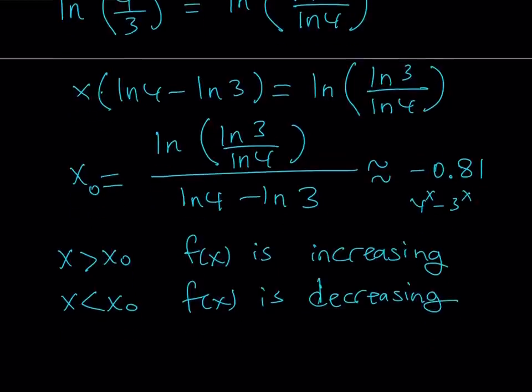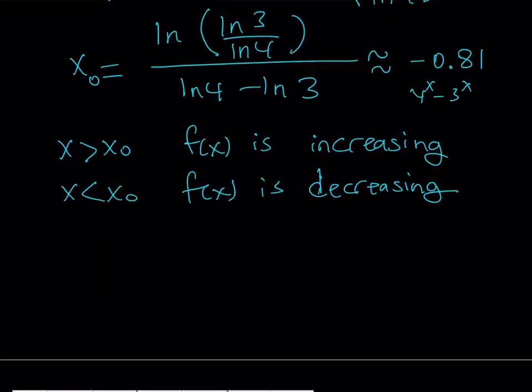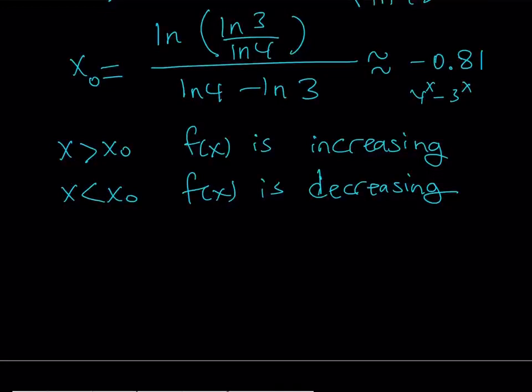And for the other interval, f(x) will be decreasing. And since this is a negative value, I can safely say that for all positive x values, my function will definitely be increasing. Now we're going to be looking at the graph, but let me just quickly tell you what this means. If a function is decreasing first and then increasing, then it's supposed to make a minimum point. That's how we can get the minima or maxima. So that's my critical point, which I called x₀.